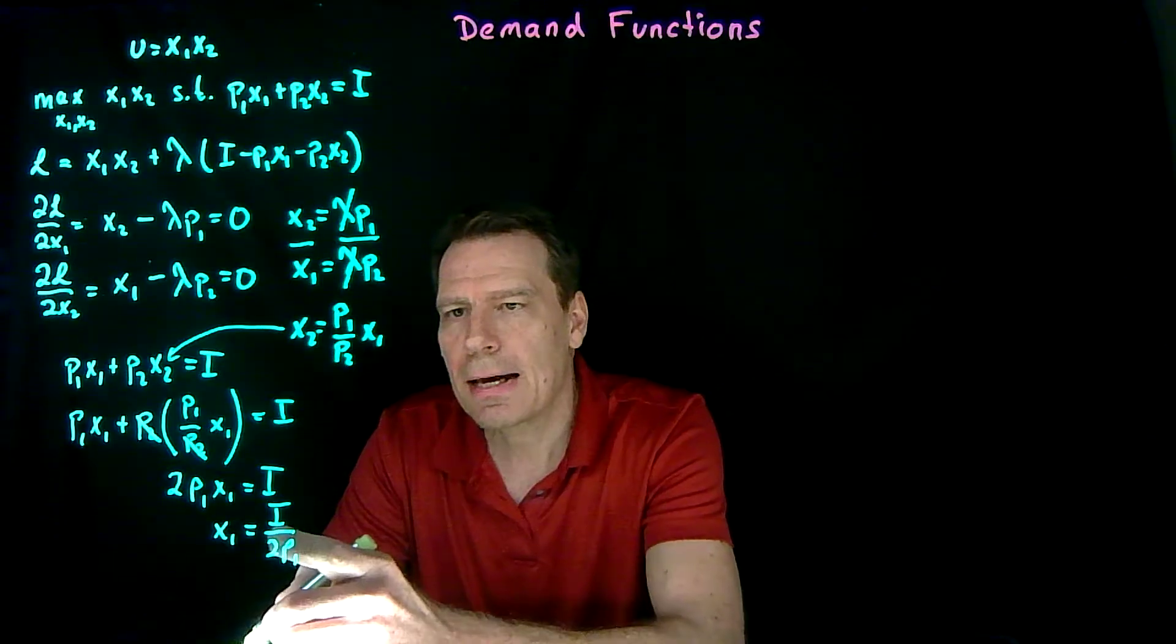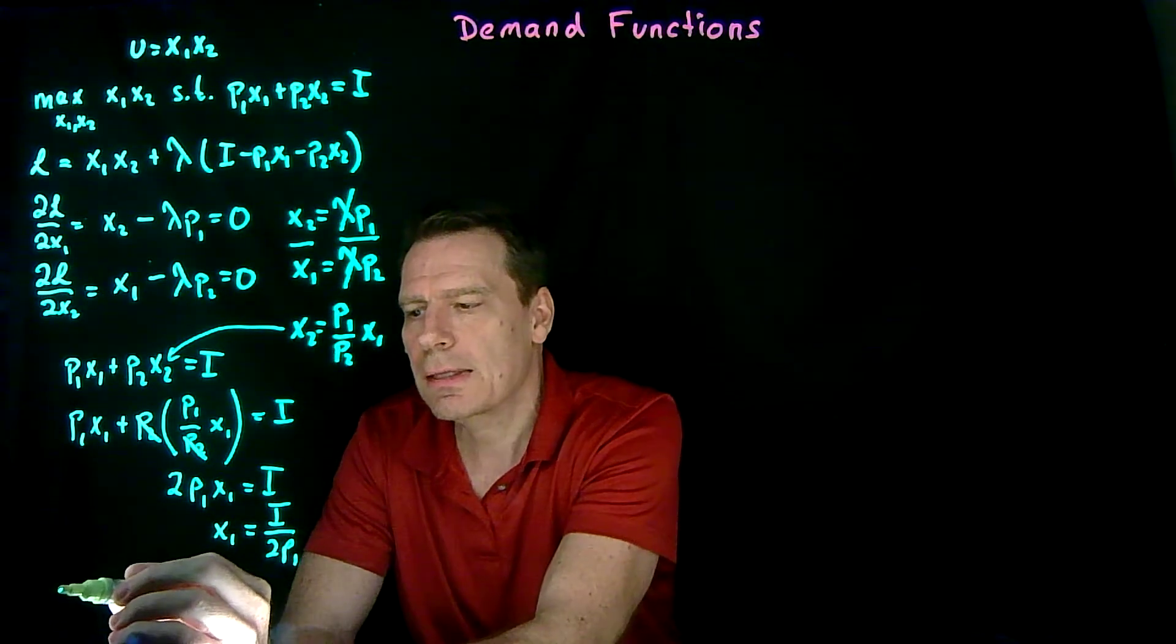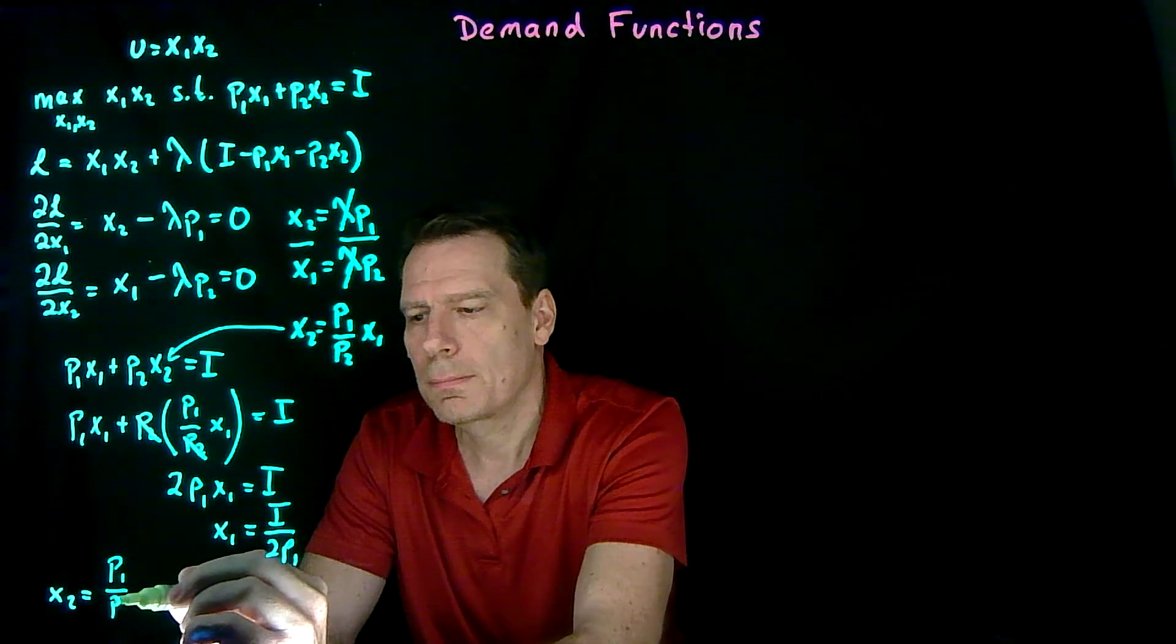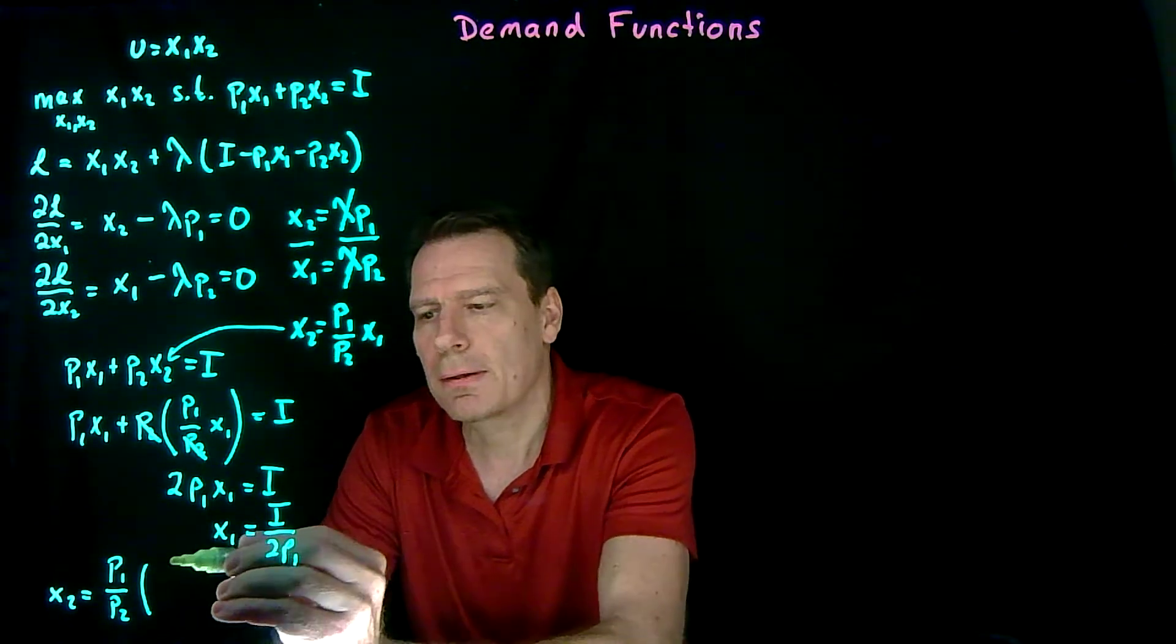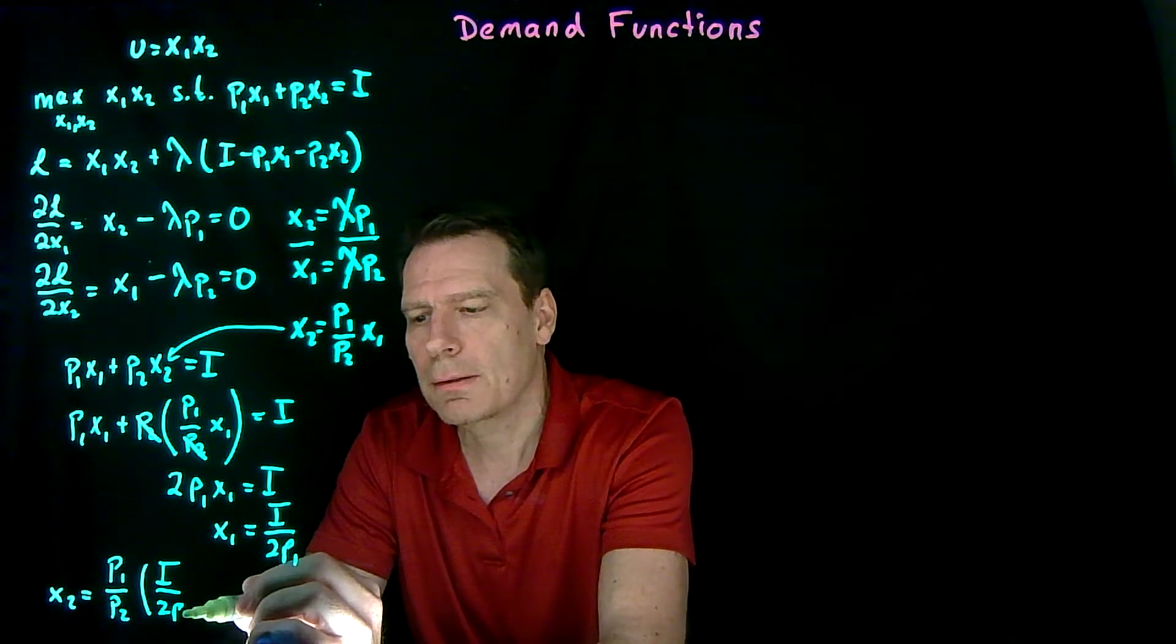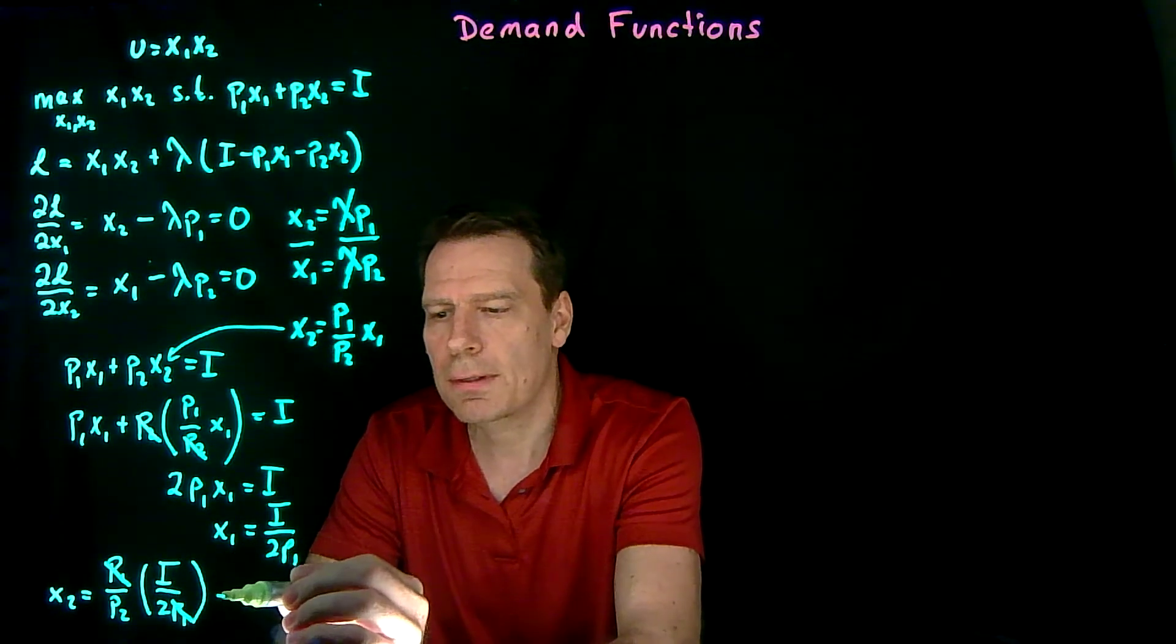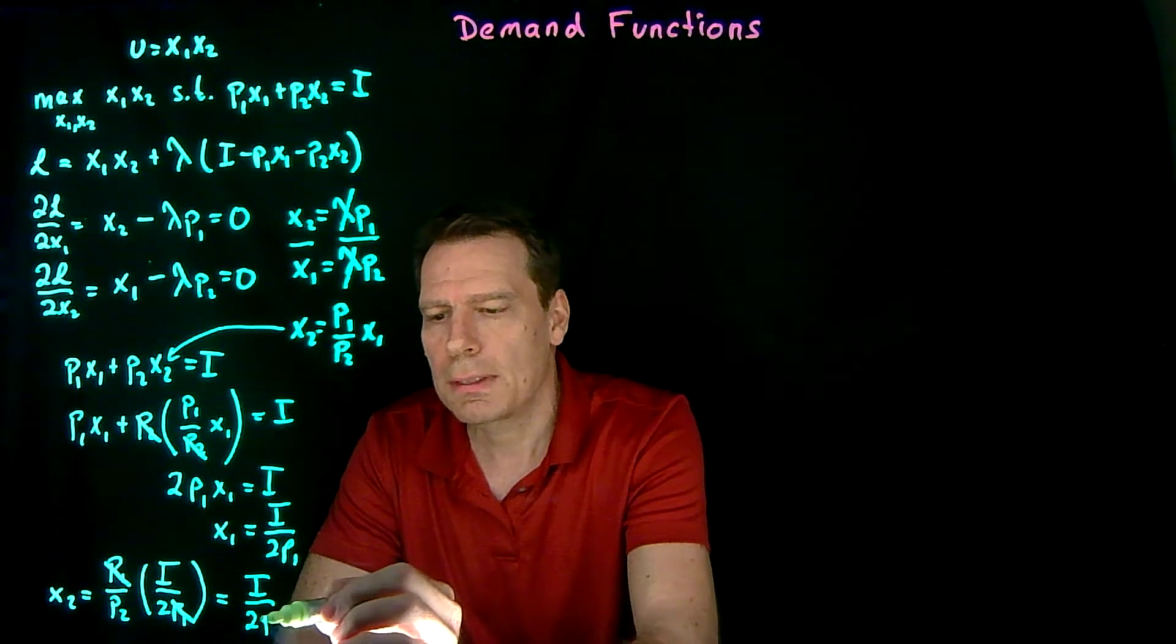Then we can take that and substitute it back into our equation for x2 to get that x2 is equal to p1 over p2 times i divided by 2p1. Now the p1s cancel and we're just left with i divided by 2p2.